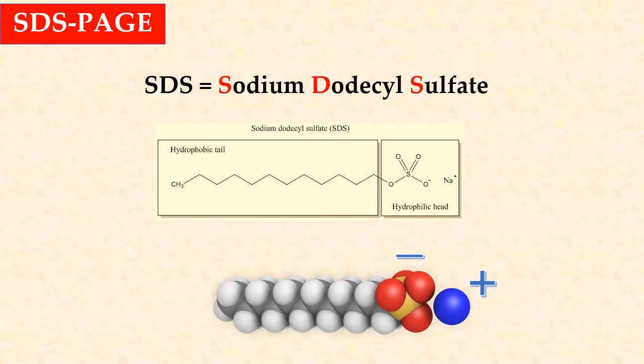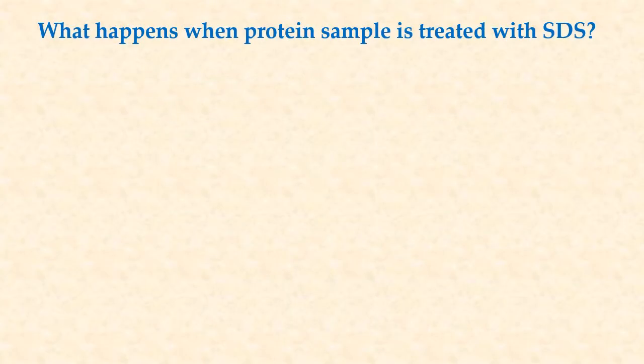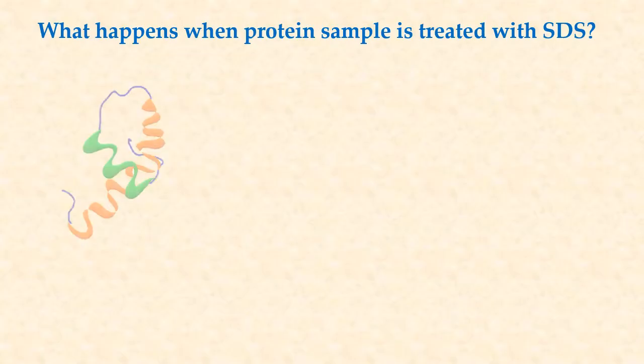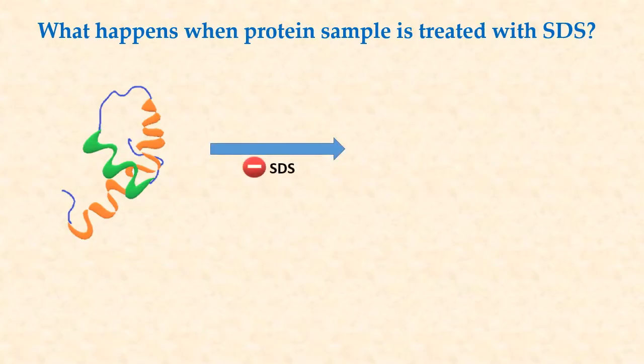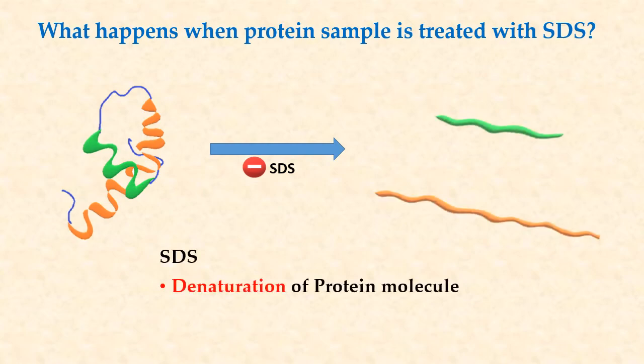Let's find out what happens when proteins are treated with SDS. Suppose this is a protein molecule. You can see that this protein is made up of two subunits, shown by colors green and orange. When we treat this protein with SDS, two things happen. First, the protein's intact structure gets disrupted — the protein is denatured by SDS. As a result, the protein unfolds and the subunits get separated.